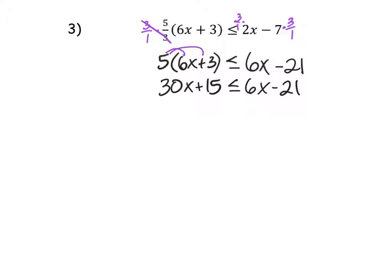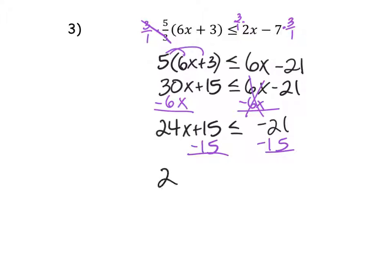Okay, let's get the x's together. Move the smaller one. The 6 is smaller. So here I have 30 minus 6, that's 24x. Negative 21. Next, I'm going to need to get the constants together. That's the 15 and the negative 21. So I'm going to do minus 15 both sides. 24x is less than or equal to negative 21 minus 15 more negatives, negative 36.